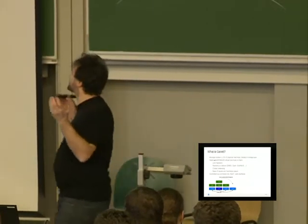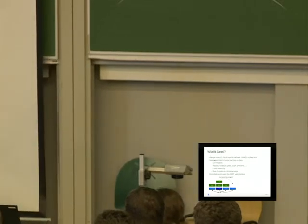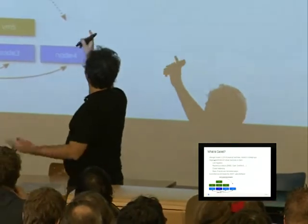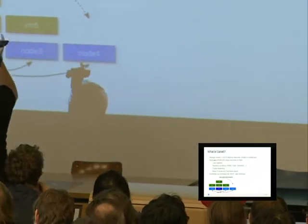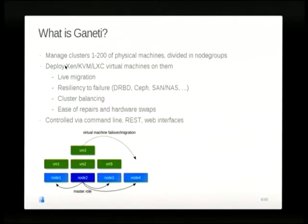There are other options as well. You can create your homegrown infrastructure. You can use Xen, KVM, LXC if you feel brave. And it supports live migration, resiliency to failure, with or without dedicated shared storage in hardware — DRBD or SAF if you want it in software. It allows you to rebalance the cluster. It has an easy way to swap hardware and repair it so that you don't depend on any single hardware, and we treat all the nodes as equal. You can control Ganeti via command line, a RESTful interface, so you can write your own software, or some people have written web interfaces for it.